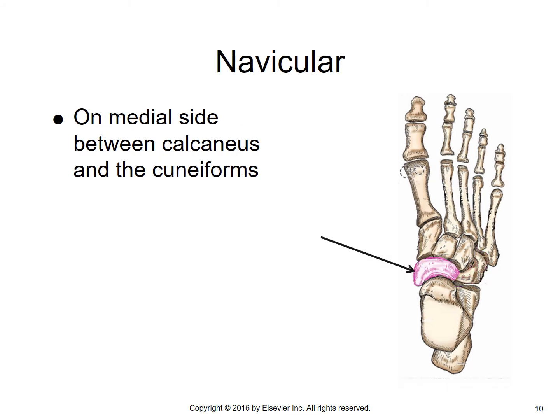Next, we've got the navicular bone. We get the term navicular from 'navis,' meaning boat-shaped. It lies anterior to the talus and behind the three cuneiform bones on the medial side of the ankle. It has one portion of note called its tuberosity — its prominent medial border.